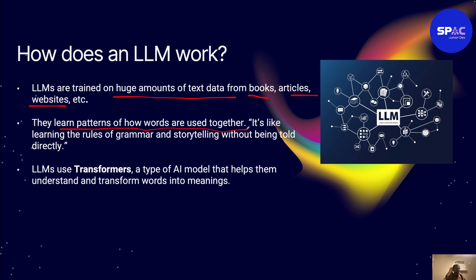After reading all this text data, LLMs learn patterns of how words are used together — it's like learning the rules of grammar and storytelling without being told directly. LLMs use something called a Transformer. Remember when we talked about ChatGPT — GPT stands for Generative Pre-trained Transformer. So LLMs use Transformers, which are a type of AI model that helps LLMs understand and find meaning in words.